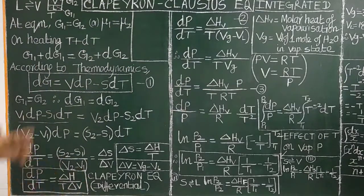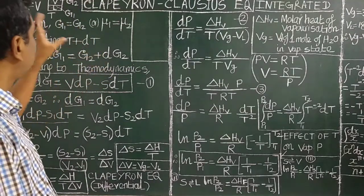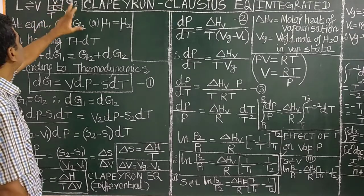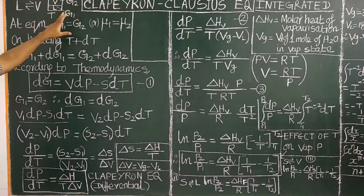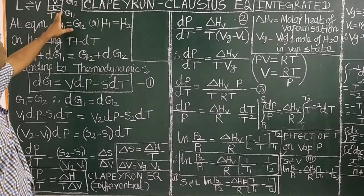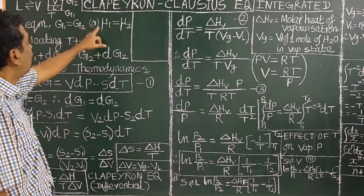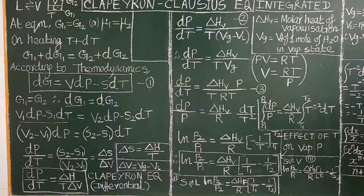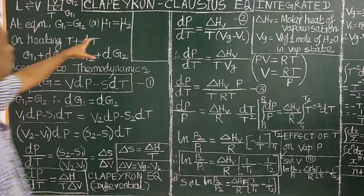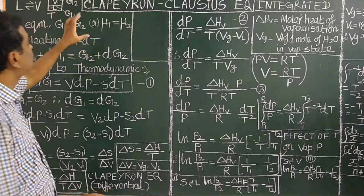Such phase equilibria curves are explained using the Clausius-Clapeyron Equation. This equation is applicable only for equilibrium processes. For example, consider liquid in equilibrium with vapor. At a particular temperature, liquid is in equilibrium with vapor. The free energy of the liquid phase is G1 and the free energy of the vapor phase is G2. G1 and G2 are the free energies of the liquid and vapor phases — also called chemical potential (mu). At equilibrium, the free energy of the liquid phase equals the free energy of the vapor phase.